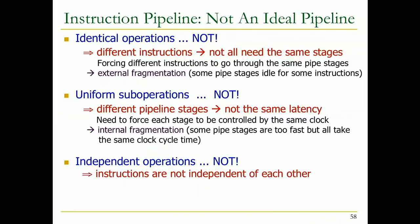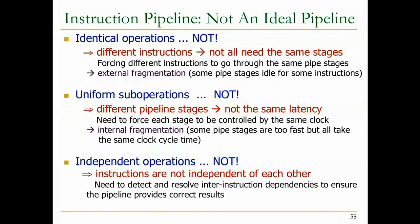You need to force each stage to be controlled by the same clock, resulting in internal fragmentation - some pipe stages are too fast but all take the same clock cycle time, wasting part of the clock cycle while in that stage. Both external and internal fragmentation reduce performance. And independent operations: instructions are not always independent of each other. You need to detect and resolve these inter-instruction dependencies to ensure the pipeline provides correct results. You cannot ignore dependencies - if this add requires the result of a memory operation you'd better supply that result.